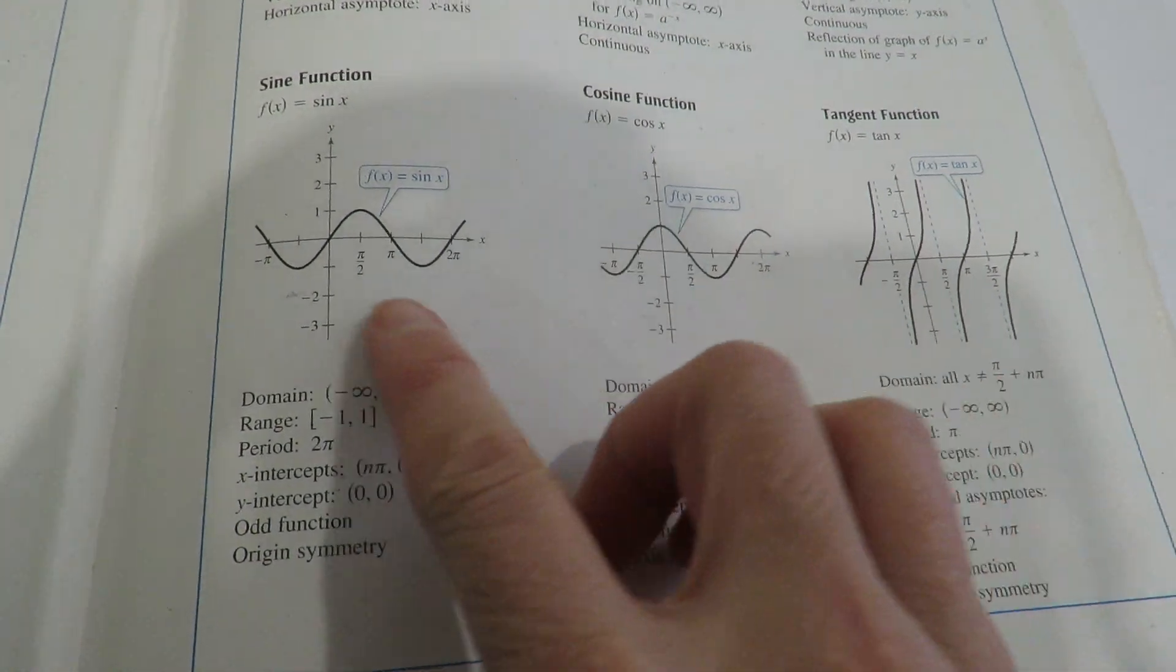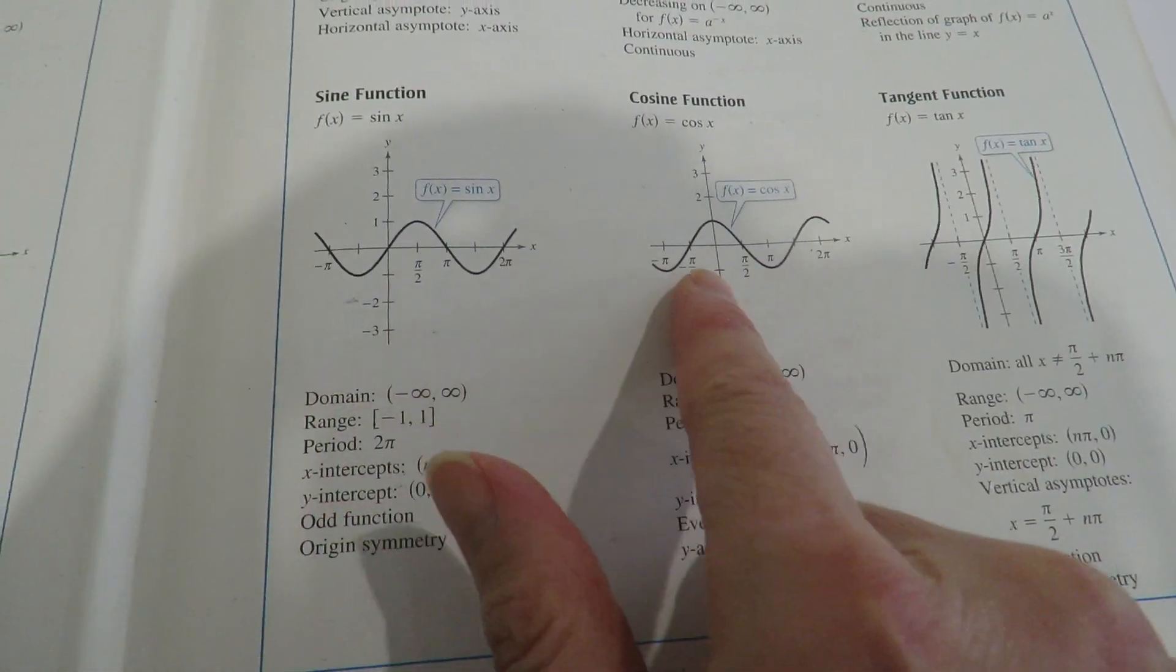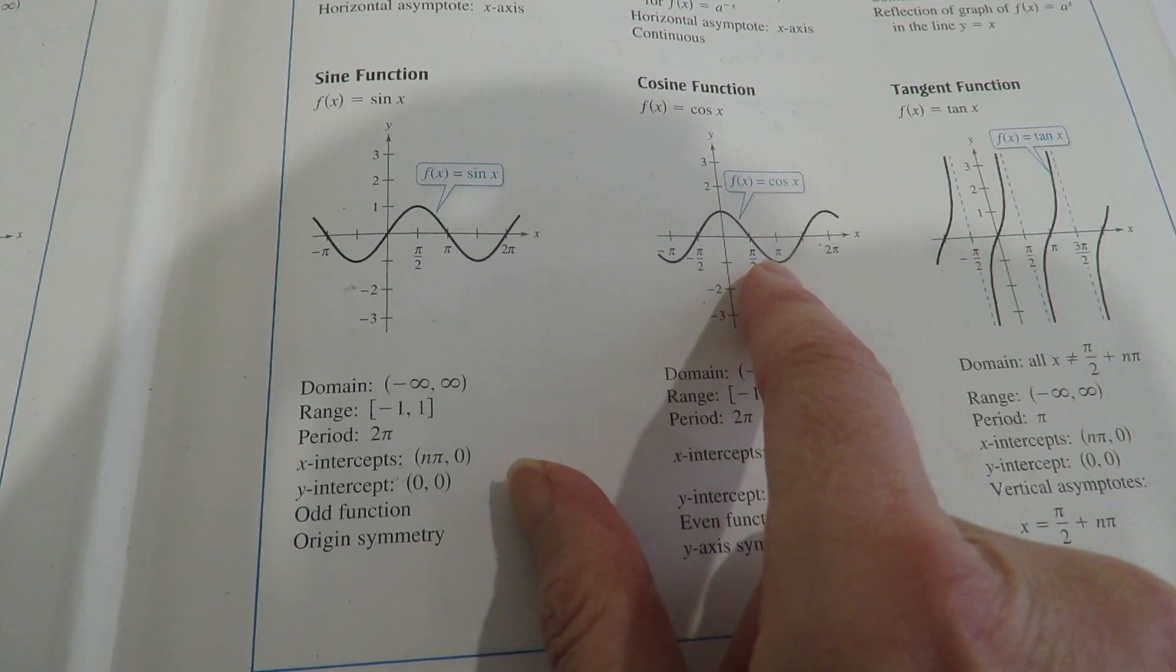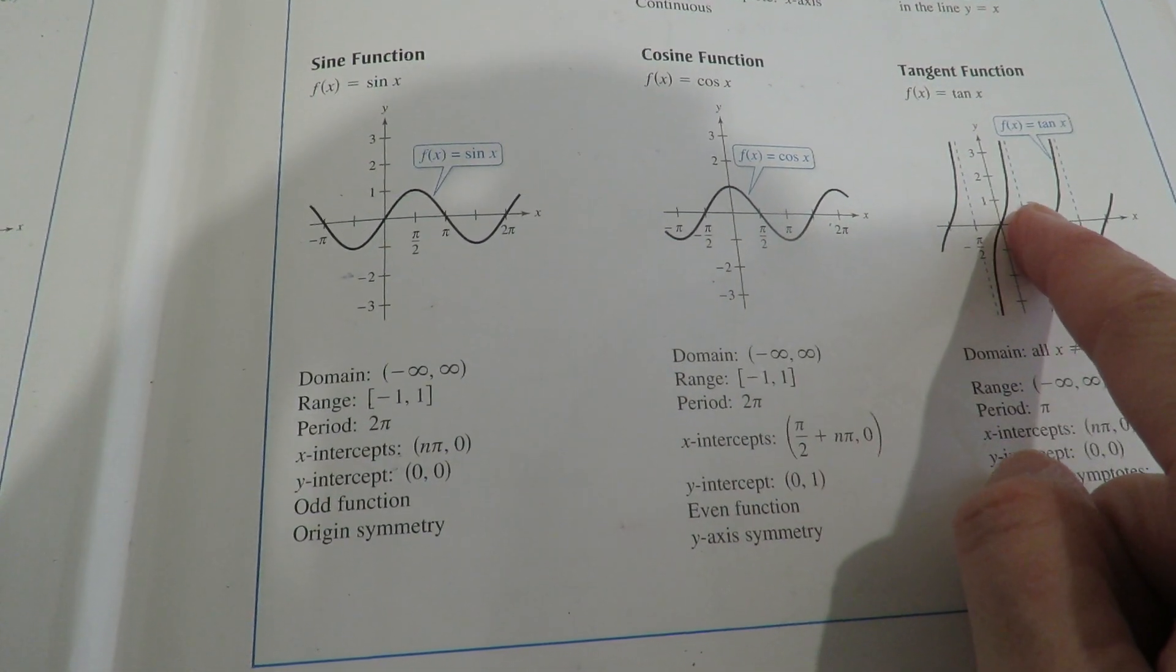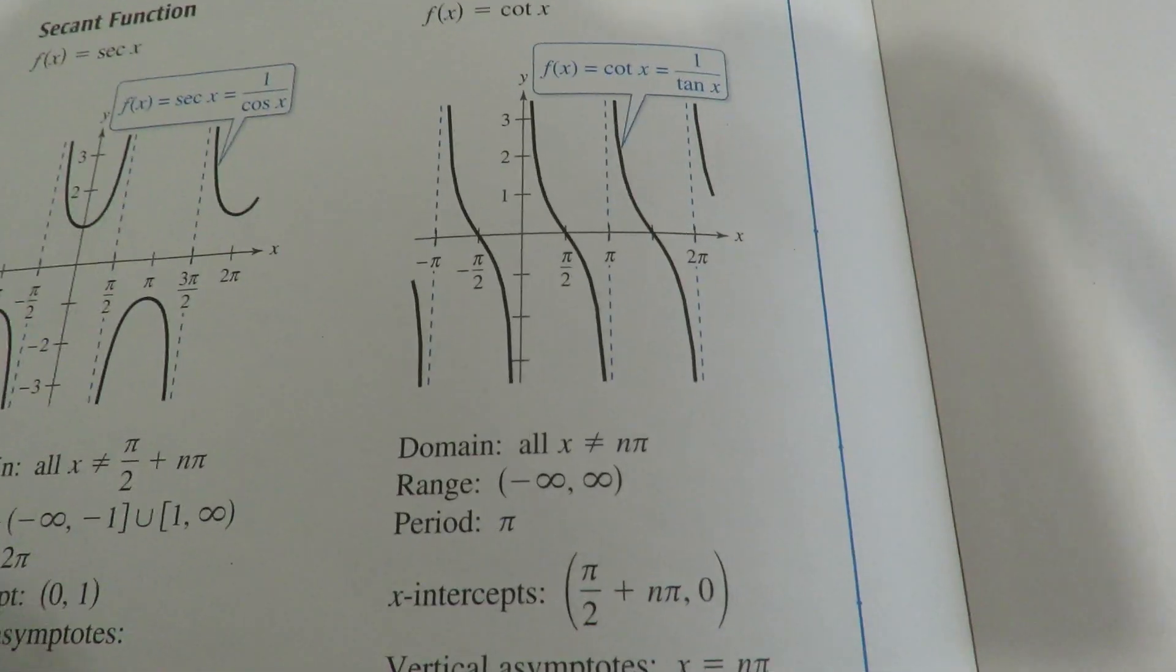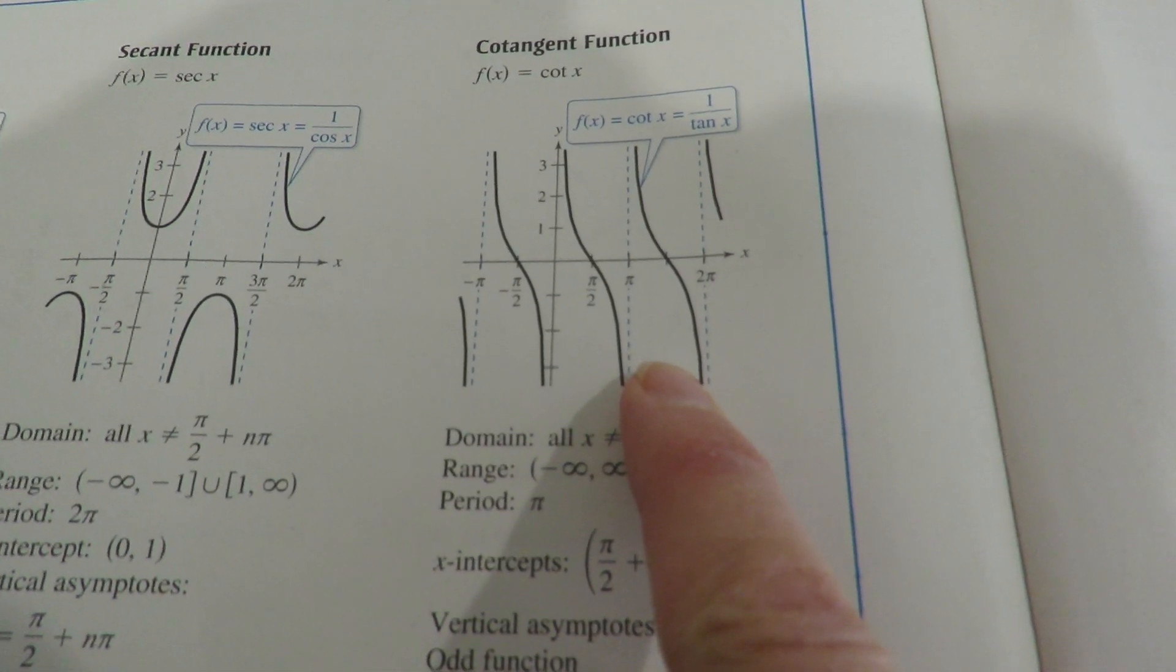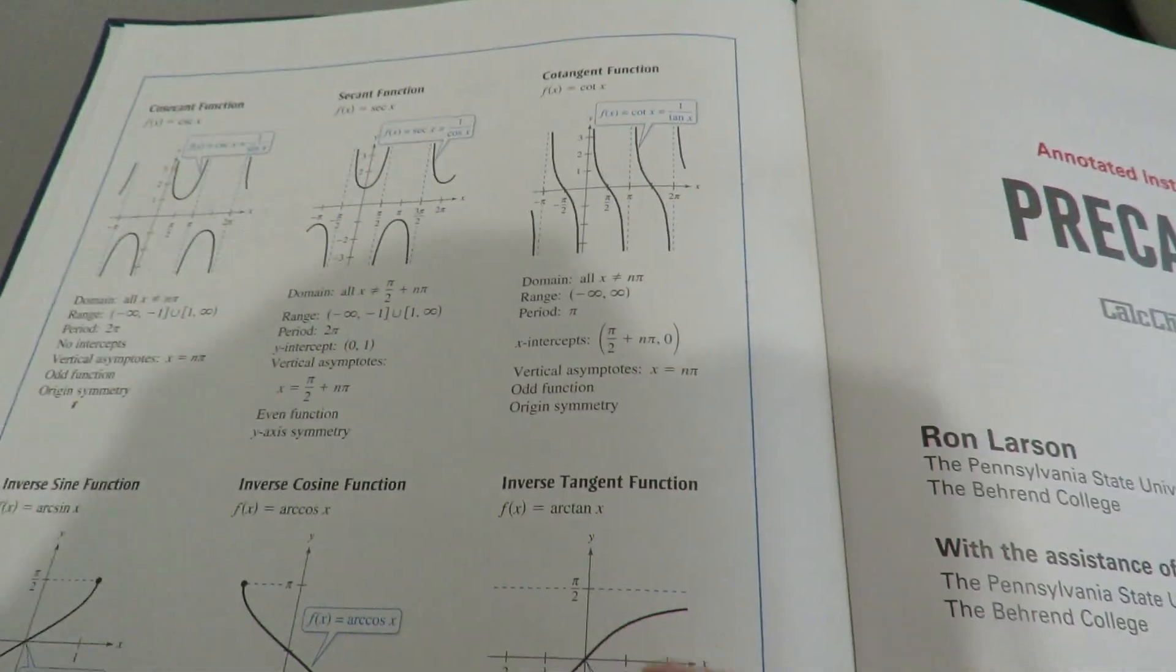In the front of your textbook are all the graphs. On a previous day we were doing the sine and the cosine function and today we did the tangent. Now I'm going to do the cotangent. I'm not going to break it down as much as the tangent because you have the basic idea now, but I'll just run through it with you.